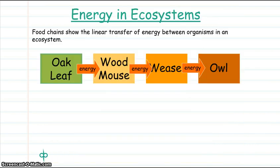Moving on to look at energy in ecosystems. A food chain shows the linear transfer of energy between organisms in an ecosystem. In this case, the oak leaf would be the producer.